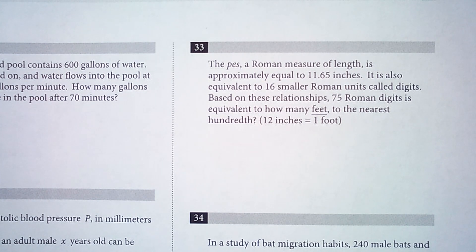The pes, a Roman measure of length, is approximately equal to 11.65 inches. It is also equivalent to 16 smaller Roman units called digits. Based on these relationships, 75 Roman digits is equivalent to how many feet to the nearest hundredth? Noting that 12 inches is equal to one foot.